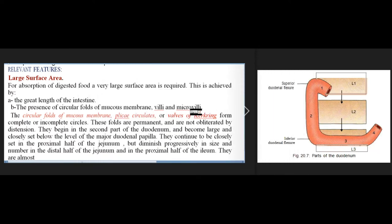The structure of the small intestine is adapted for digestion and absorption. A very large surface area is required for absorption of digested food. This is achieved by the great length of the intestine and the presence of circular folds of mucous membrane, villi, and microvilli. The circular folds of mucous membrane, plicae circulares or valves of Kerckring, form complete or incomplete circles.